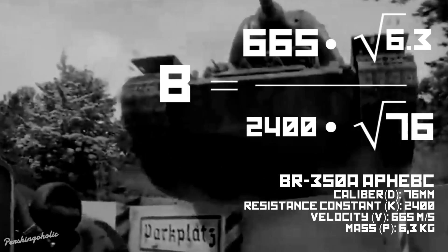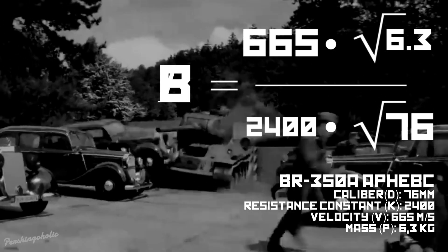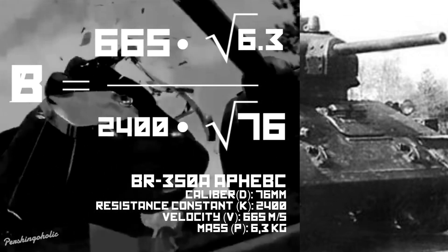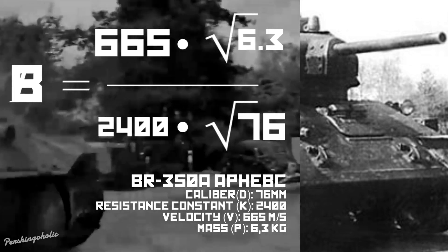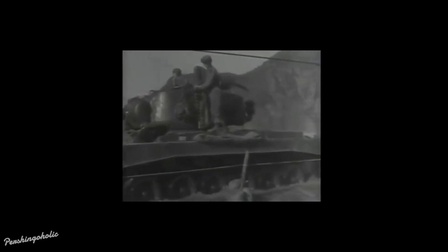By plugging in the numbers from a tank's stats, we can figure out how much armor the shell is able to go through. A good example would be the BR350A APHEBC shell from a T-34 STZ. Once the numbers are plugged in, you get 0.08. Moving the decimal point three places over, you get 80 millimeters, meaning that if this specific shell penetrated a tank, it would go in about 80 millimeters.